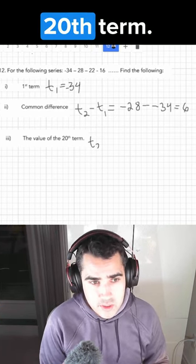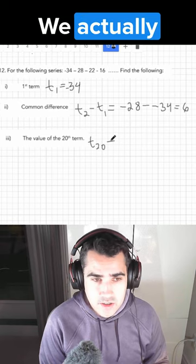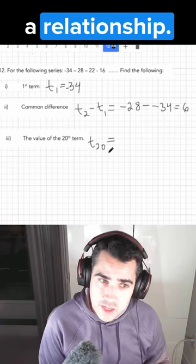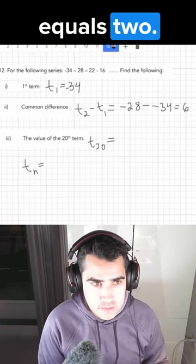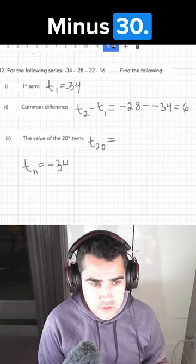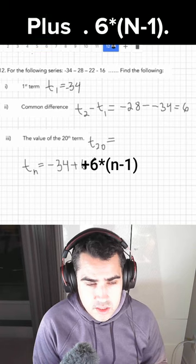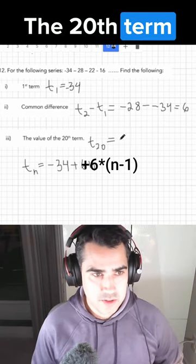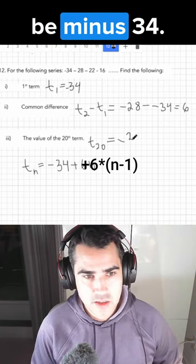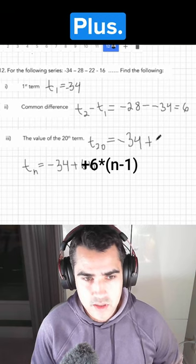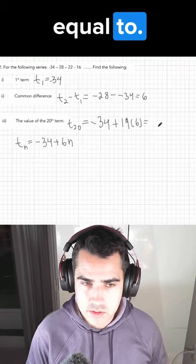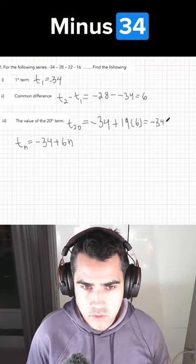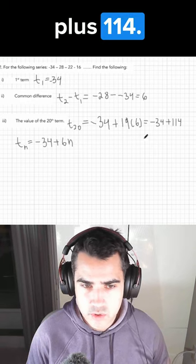And for the value of the 20th term, we actually ought to make a relationship. So it would be Tn equals to minus 34 plus 6n. The 20th term is going to be minus 34 plus 19 times 6, which is equal to minus 34 plus 114, which is equal to 80.